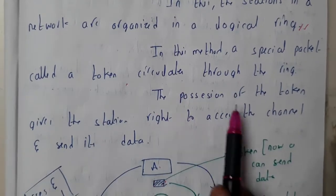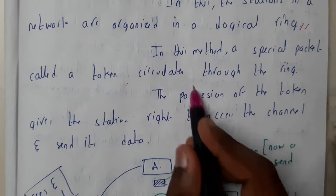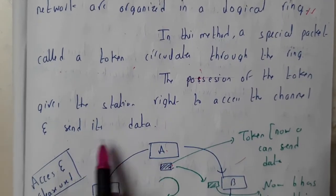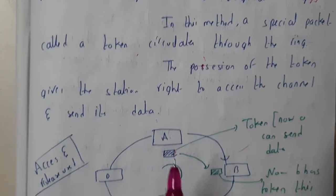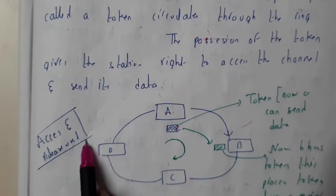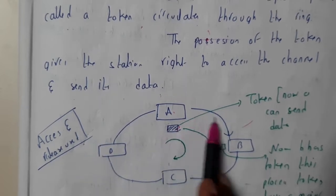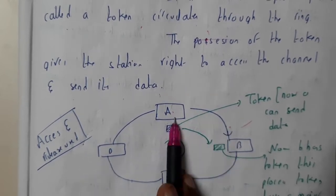The possession of the token gives the station the right to access the channel and send its data. We can say that access and release is used. It will access the channel, use the channel, and release the channel, and the data packet will be sent to the next.